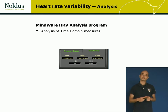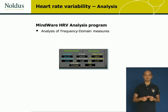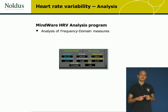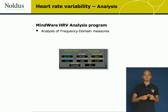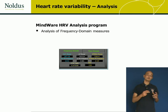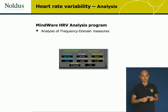Other measures of heart rate variability are frequency domain measures. For instance, the high frequency measure is indicative of parasympathetic activation, whereas the low frequency measure is indicative of both parasympathetic and sympathetic activation. Again, the ratio of low frequency divided by high frequency measure is indicative of sympathetic activation.